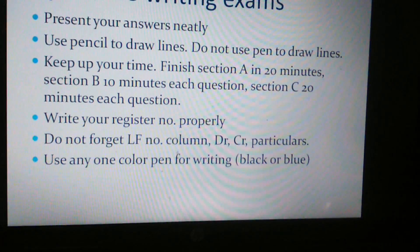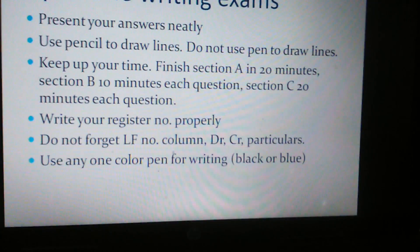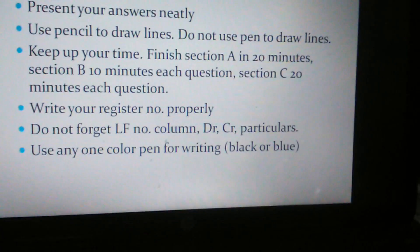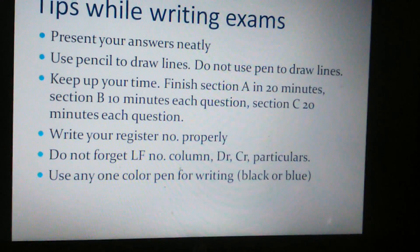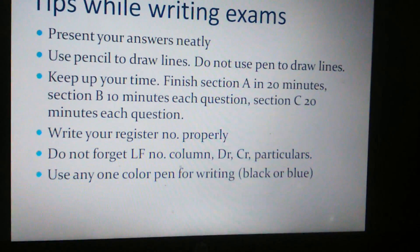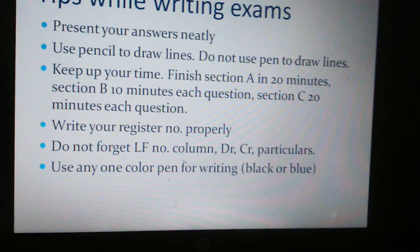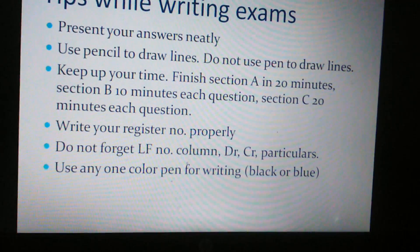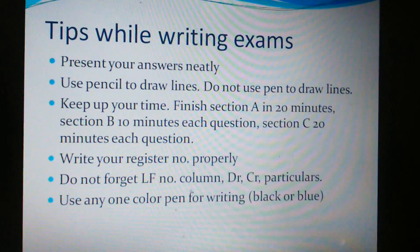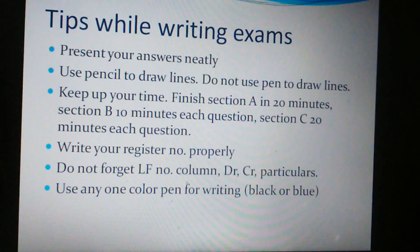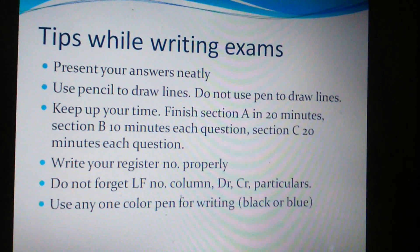Manage your time properly — for Section A allow about 20 minutes, each Section B question about 10 minutes, and each Section C question about 20 minutes. Plan however it is comfortable for you. Write your register number and question number properly. Include the LF number or JF number column, debit and credit side, particulars column — everything is important. Write headings properly, such as 'journal entries in the books of' or 'partners' capital account', whichever you are doing. Use only one color pen — black or blue; red is restricted, so don't mix colors.